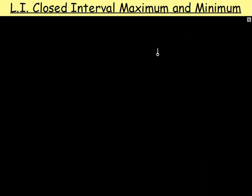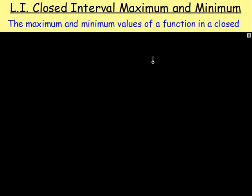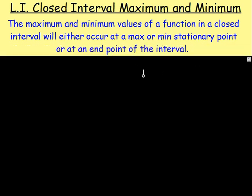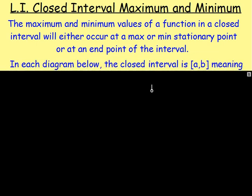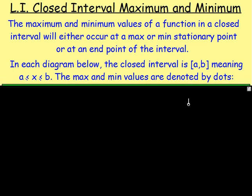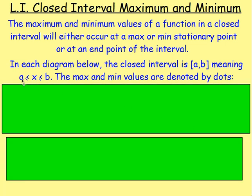What we're going to look at today is the maximum and minimum values of a function across a closed interval, meaning we're only going to have certain values of x. The maximum and minimum values of a function in a closed interval will either be at the stationary point or at the end points of the interval. In each of the diagrams below, the closed interval is AB, meaning x is between A and B — bigger than or equal to A and less than or equal to B.